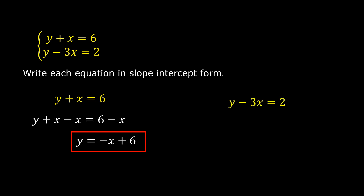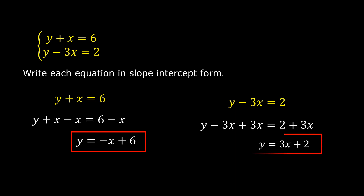The second equation is y minus 3x is equal to 2. Add 3x to both sides, so we have y minus 3x plus 3x is equal to 2 plus 3x. This simplifies to y is equal to 3x plus 2. This is now in slope-intercept form.